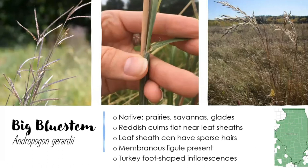Big bluestem, Andropogon gerardii, is actually our state grass in Illinois. It can be found in every county in Illinois in prairies, savannas, and glades, but also on roadsides. Typically when you say prairie, this is the grass people think of. It can grow up to eight feet tall and is a bunch grass. Its stems are often flattened and reddish in color — you can find areas along the grass where you can see that reddish stem. The leaf sheath and the base of the blade can have sparse hairs, and it has a membranous ligule. The inflorescence is a raceme, but most people describe it as a turkey foot, which gives way to another common name. There is also sand bluestem, but it's only known in one county in Illinois, so if you see something like this, you're looking at big blue.